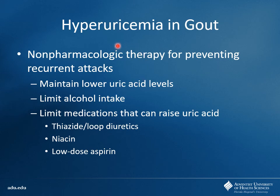Non-pharmacologically to prevent gouty attacks: maintain lower uric acid levels, limit alcohol intake because alcohol is typically dehydrating — it inhibits ADH release, so once you break the seal you start to lose a lot of fluid, leading to dehydration and more likelihood of uric acid precipitation. There are also some medications that can raise uric acid levels.